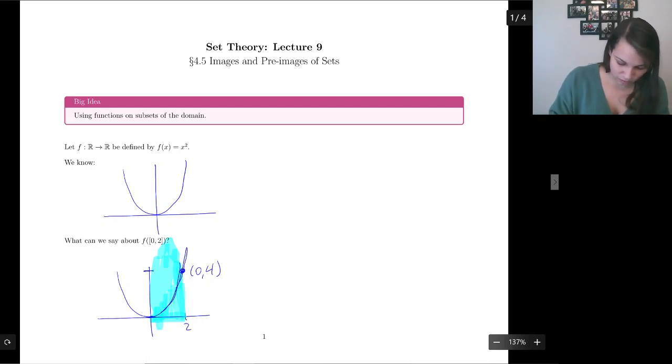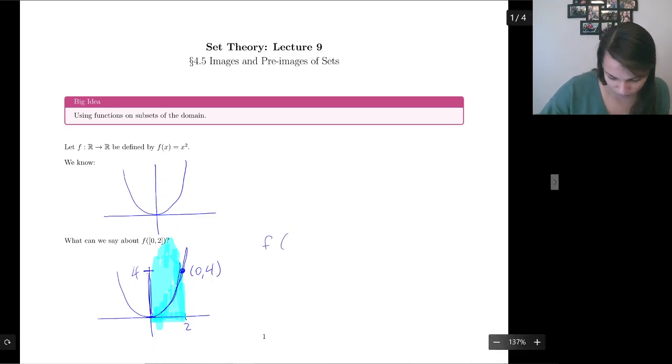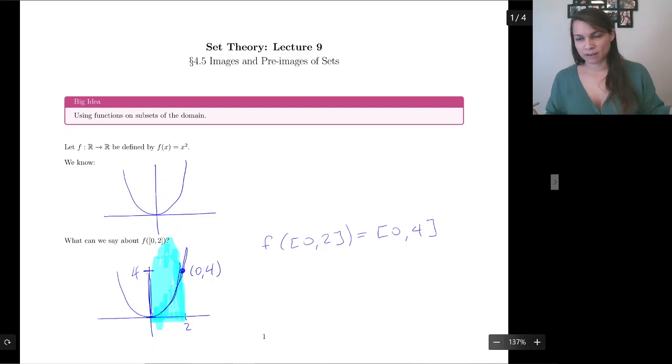So that means this interval right here is the interval that [0, 2] is going to get mapped to. That's all the y values that [0, 2] maps to. And we can write this like this. Okay. So not that bad of an idea. It's just where does an interval get mapped to using a function f?